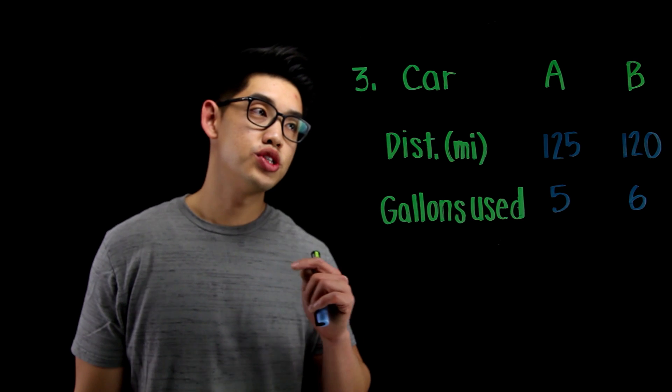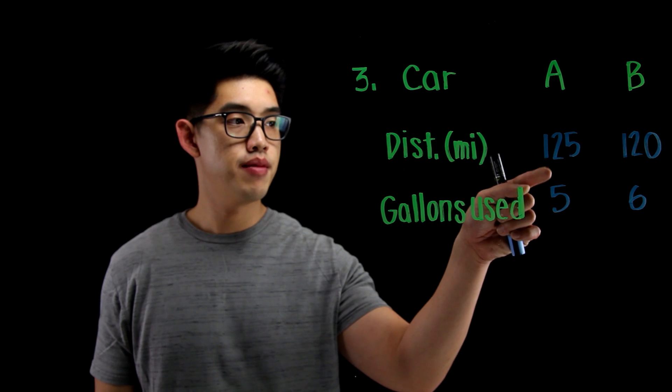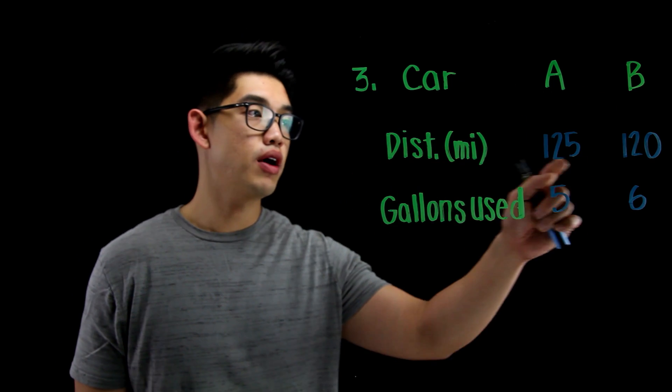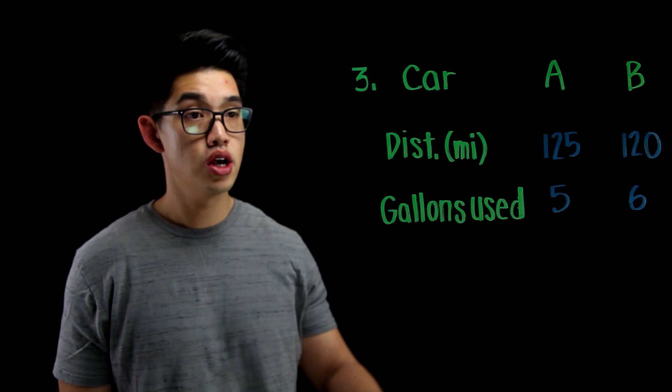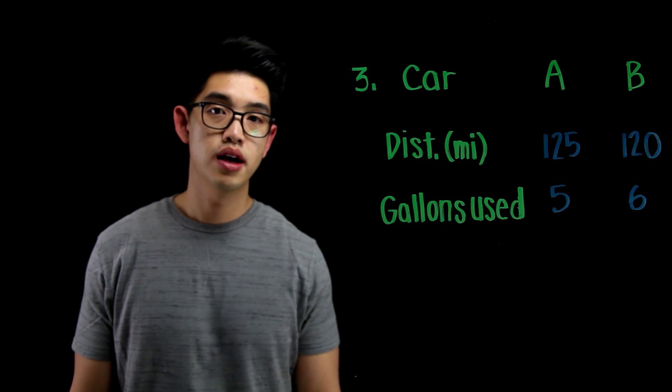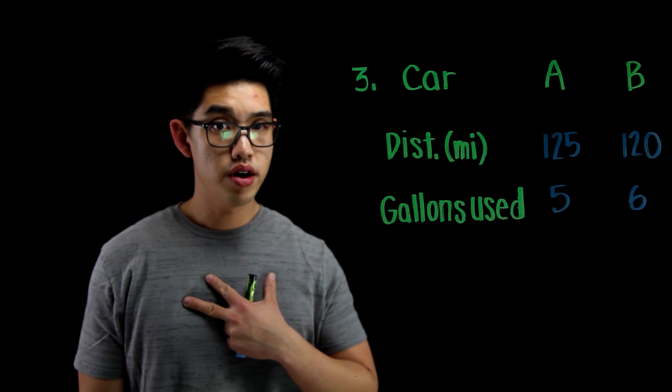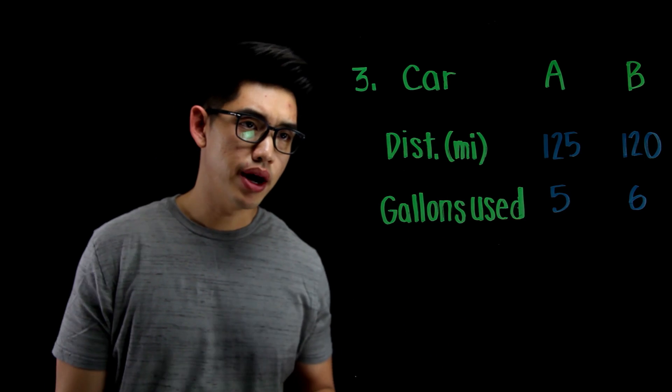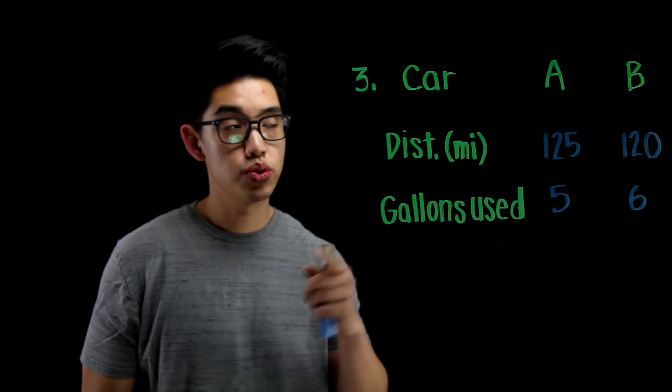Number 3 shows you two different types of cars. Car A can drive 125 miles using only 5 gallons of gas. And Car B can drive 120 miles using 6 gallons of gas. Our goal is to try to figure out which car gets better mileage. Which car would you choose? Which car is better?